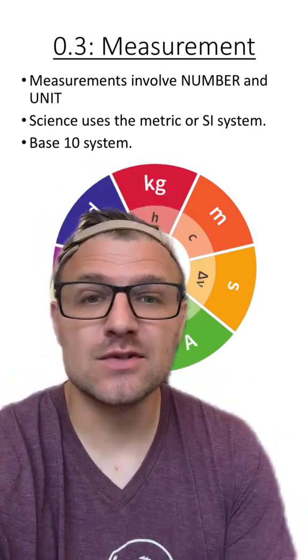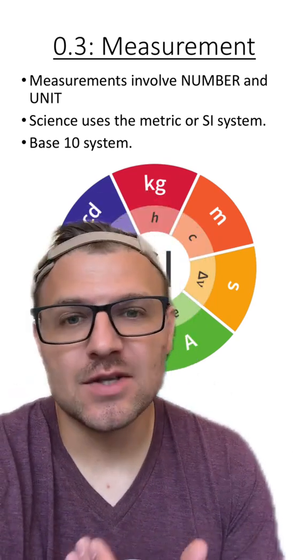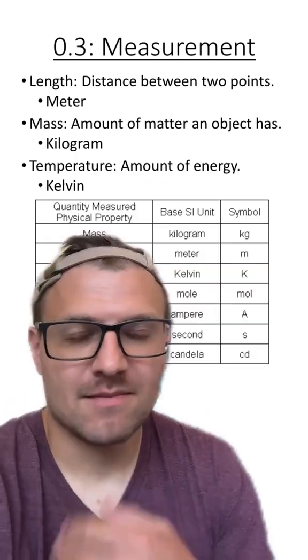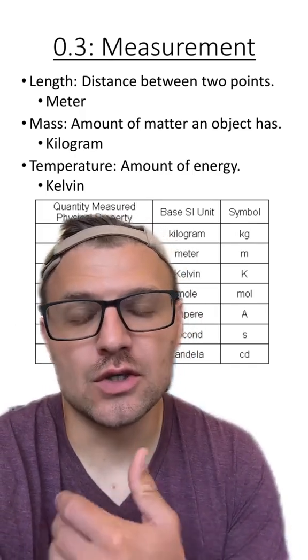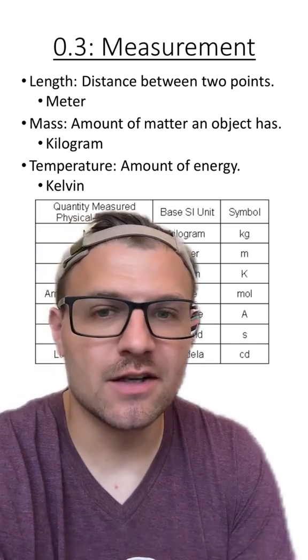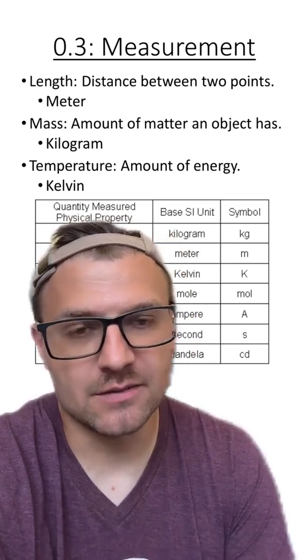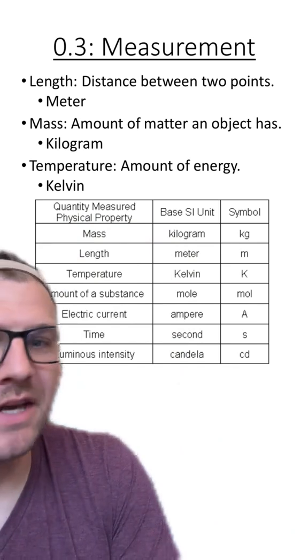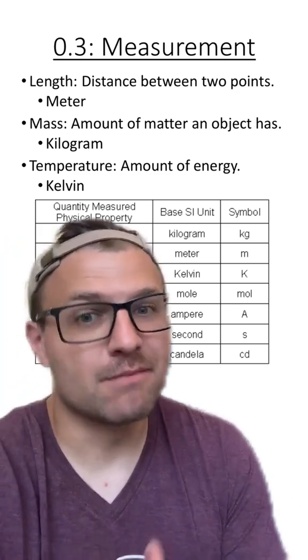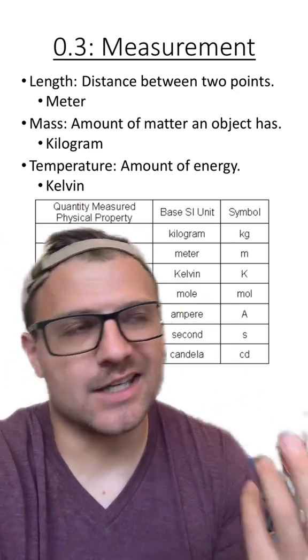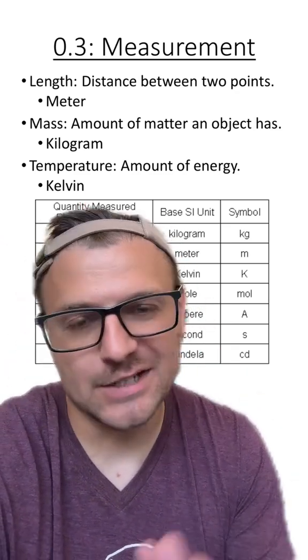Now in science, we use the metric or the SI system. And these systems have a base unit of 10. Now typically for the SI system for length, we're going to use meters. For mass, we're going to use kilograms. And for temperature, we use Kelvin. You can see in this chart, there are other base units that we use, but these are typically the most common that we're going to use in science. And honestly, in my classes, I actually don't use Kelvin. I use Celsius, but it is what it is.